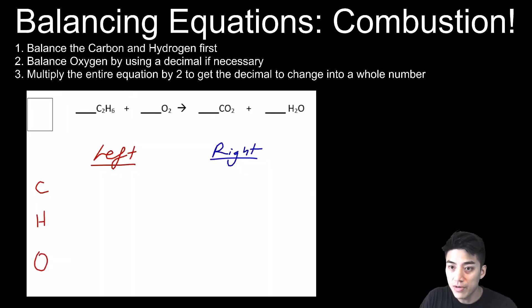We know that it's combustion because it's a hydrocarbon plus oxygen, and the products are CO2 and H2O. We're just going to follow the steps. Step one is balance the carbons and hydrogens first. But before we do that, let's get a count on each side.